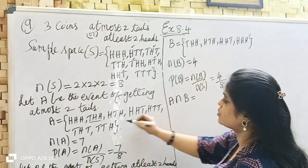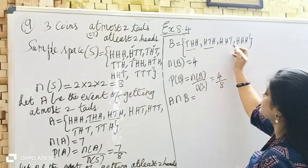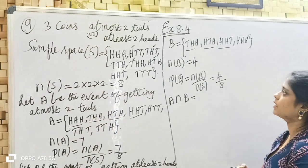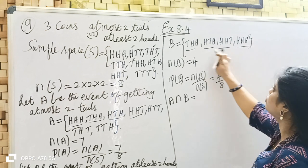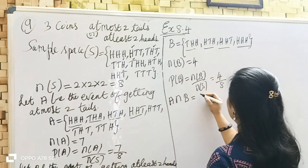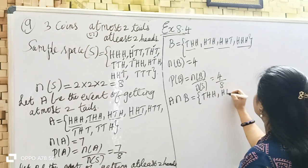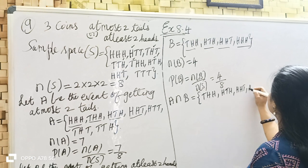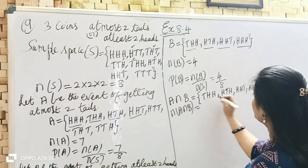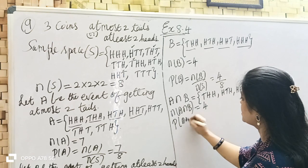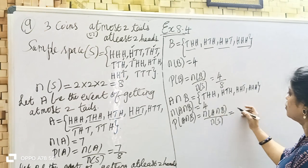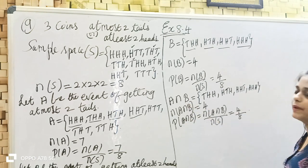HTH, HHT are also present. Triple H and Triple T. So 1, 2, 3, 4 — balance 3. A intersection B is THH, HTH, HHT. N(A intersection B) = 1, 2, 3, 4. P(A intersection B) = N(A intersection B) / N(S) = 4/8.